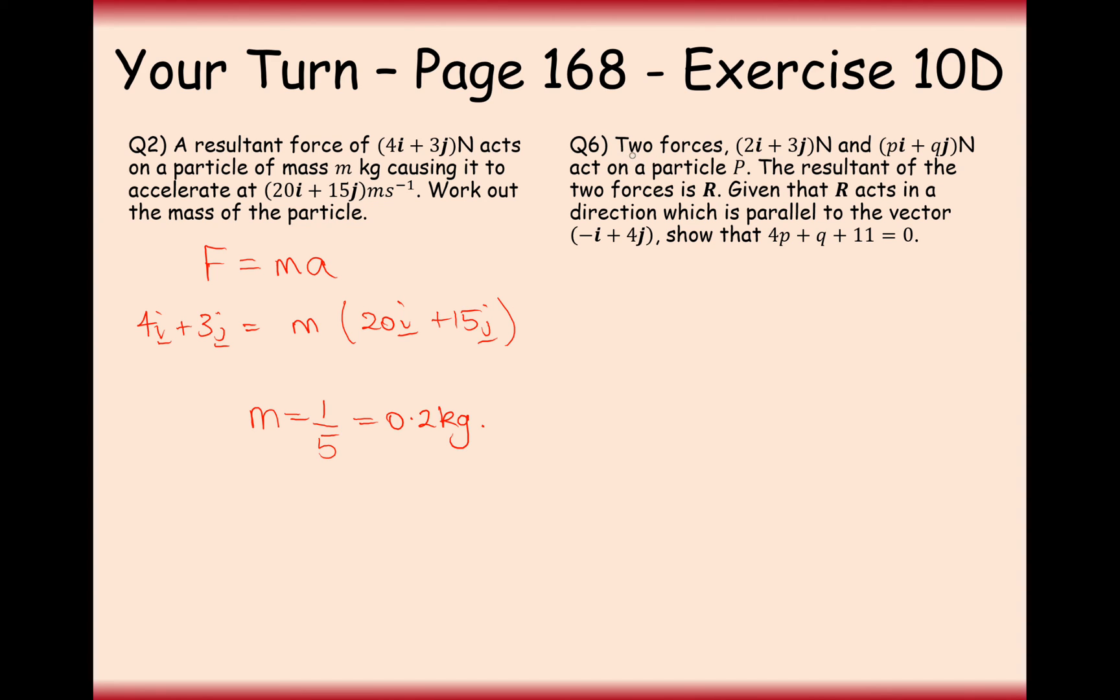Question 6 now from the exercise 10d. Two forces, 2i plus 3j and pi plus qj newtons act on a particle P. The resultant of the two forces is R. Given that R acts in the direction which is parallel to the vector minus i plus 4j, show that this is true. So what we need first is for the resultant components to be calculated. So P plus 2 for the i component and 3 plus q for the j component. So that's the resultant of these two forces. And now we want for the direction vector to be parallel to this vector here.